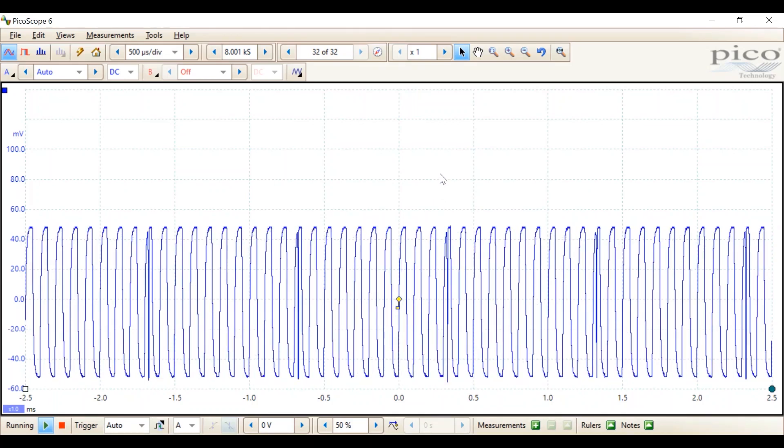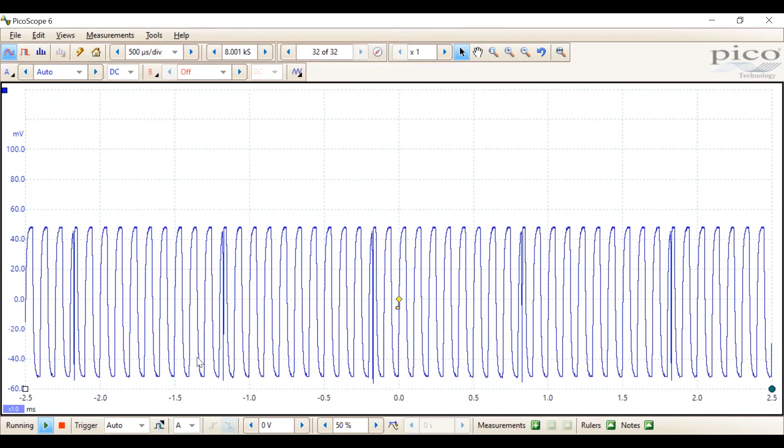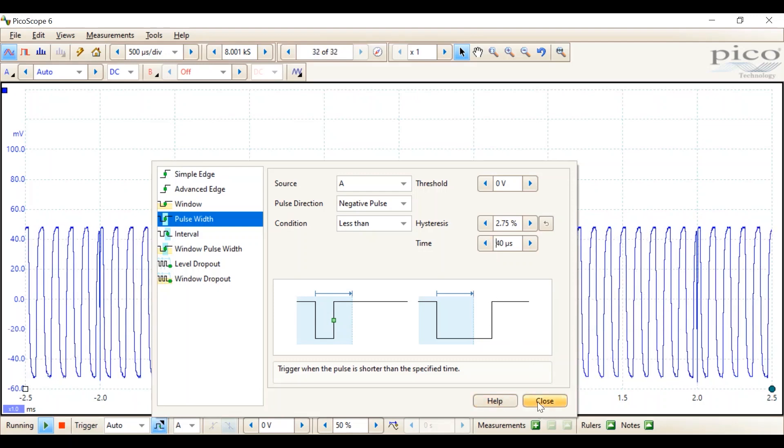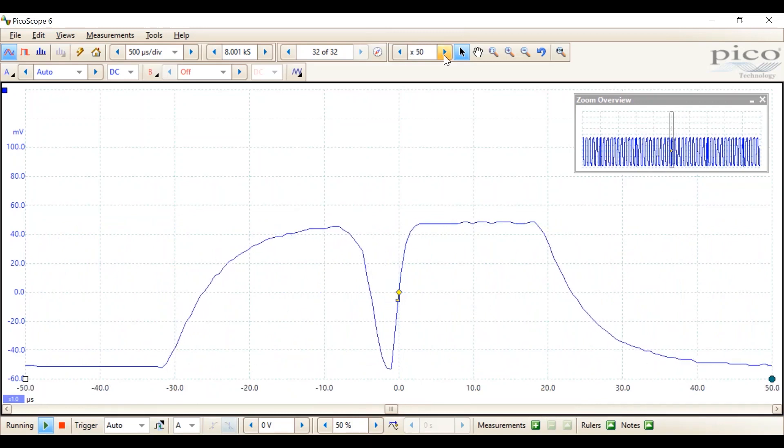At the moment, it's still capturing all the pulses because these are just about 50 microseconds. But if we reduce that time now to 40 microseconds, it only isolates the glitch, as all the other pulses are more than 40 microseconds. Again, we can zoom in on this so we can see quite clearly what's happening. This is basically a threshold that if the pulse crosses the threshold in less than 40 microseconds, it triggers, and it ignores all the pulses that take more than 40 microseconds.